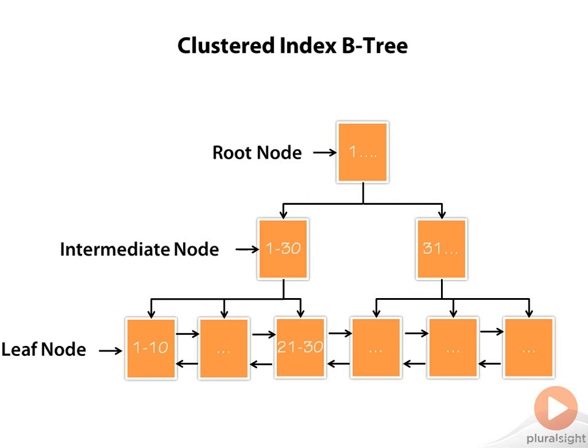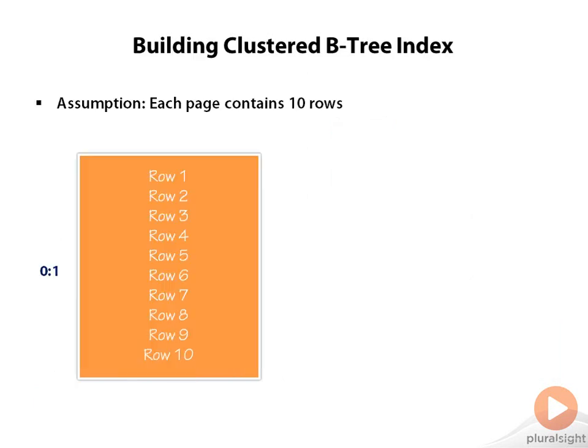Here is a simple example where we have a root node, intermediate node, and leaf node. In cluster index of InnoDB, we only have data in a leaf node. A root node and intermediate node will have a pointer to the next level node. Here is a data page, and for simplicity, we will assume that a single data page can contain 10 rows or 10 entries.